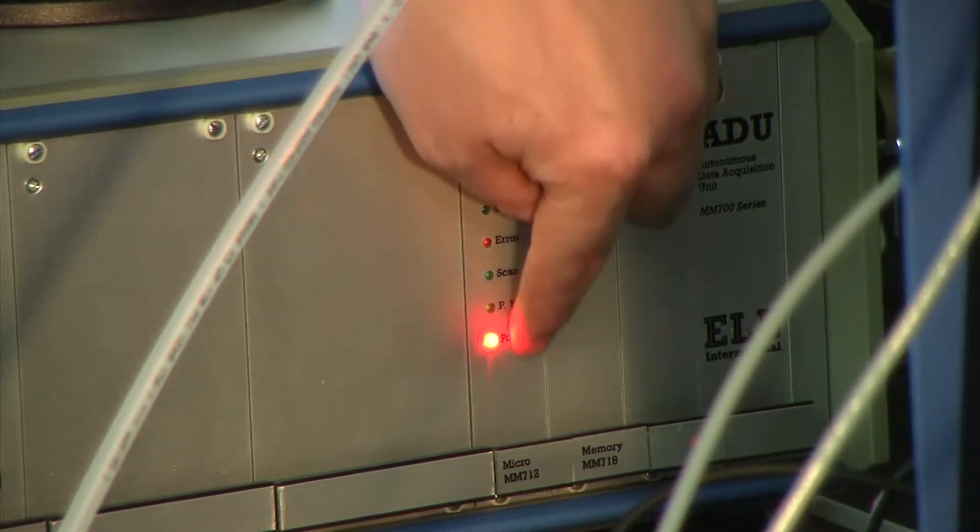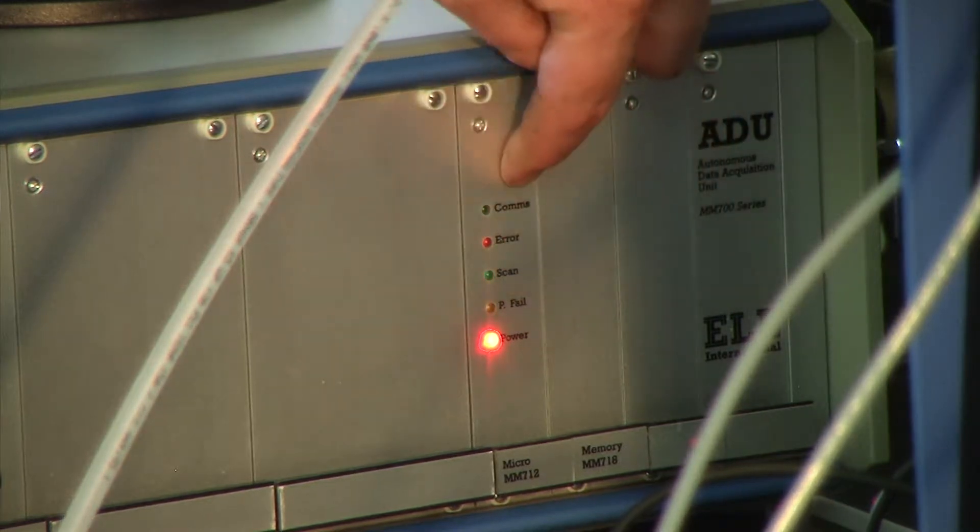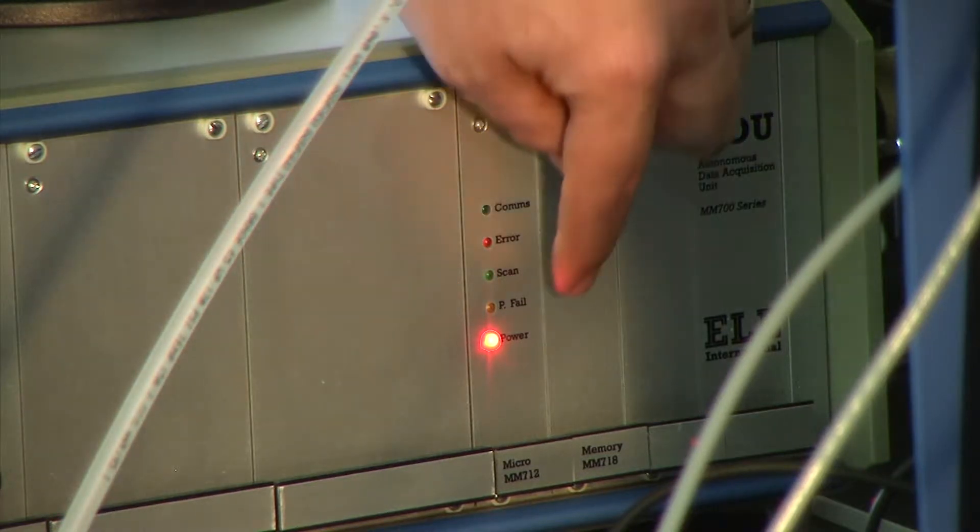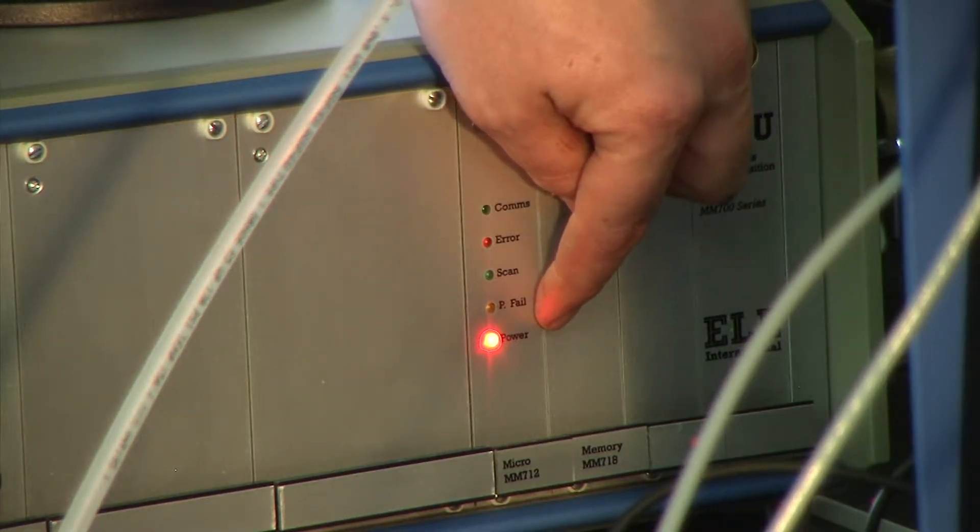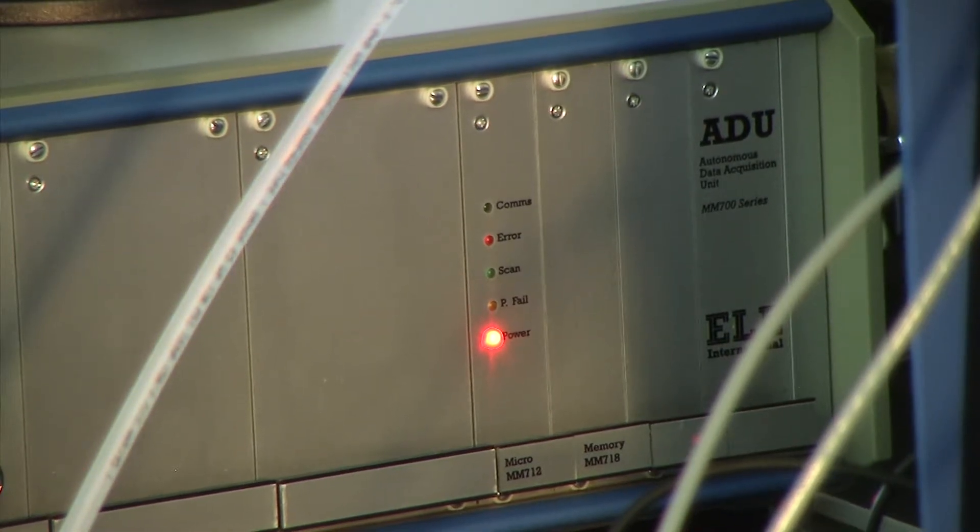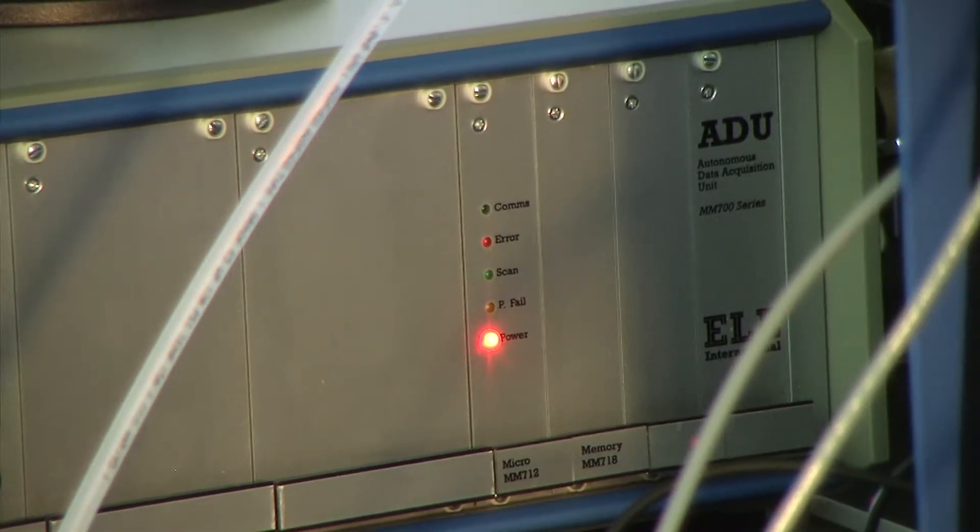Another good feature to the ADU is this bank of LEDs that has five LEDs here that provide information to the user. The very bottom LED is power, it's a red LED that just means we have power going and the power is turned on. The one right above that is P fail, which means power failure. It's an amber LED and if that's on that means that it's encountered a power failure at some point, whether it be you've turned it off or the building has had a power failure or something. What that lets you know is that if the power has failed the data from the transducers has not been collected for some period of time.